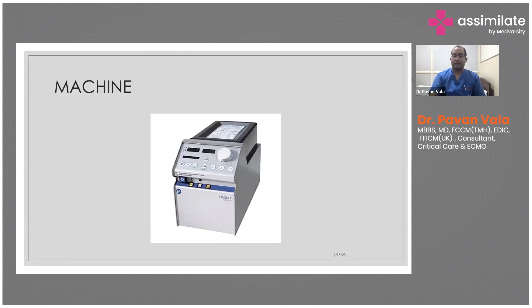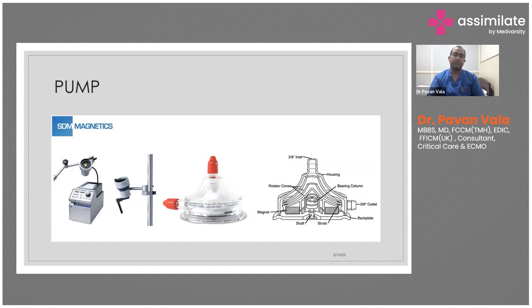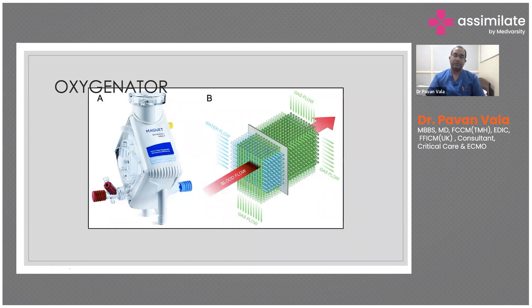This is what a basic Maquet Rotaflow machine looks like — a display and dials in front, and the pump at the back. It uses a centrifugal pump, unlike dialysis machines which use a roller pump. For the flows we target on ECMO — five to six liters per minute — a roller pump would cause too much hemolysis. The centrifugal pump uses a magnet spinning at up to 3,000–4,000 RPM, generating centrifugal force that sucks in blood and pushes it out.